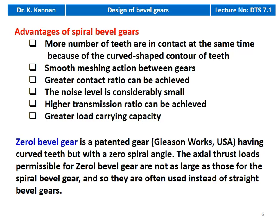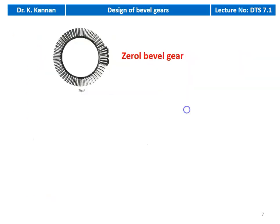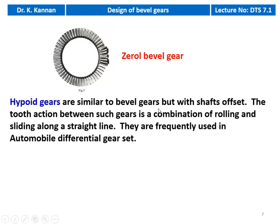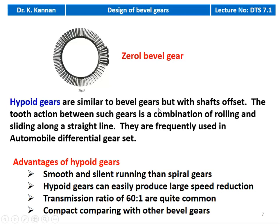Zero bevel gear is a patented gear of Gleason Works USA having curved teeth but with a zero spiral angle. The axial thrust loads permissible for zero bevel gear are not as large as those for spiral bevel gear, and they are often used instead of straight bevel gear. Hypoid gears are similar to bevel gears but the shafts are offset; the tooth action is a combination of rolling and sliding along a straight line, and they are frequently used in automobile differential gear sets.